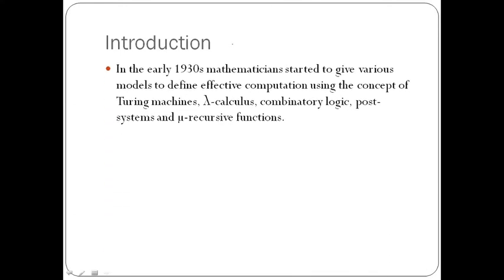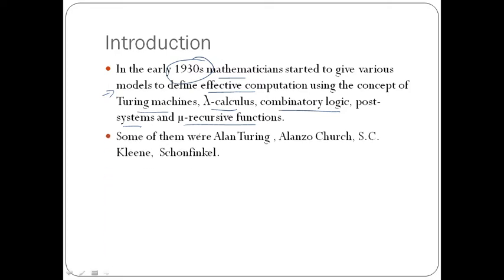To define effective computation using the concept of Turing machines, lambda calculus, combinatory logic, post systems, and mu-recursive functions, mathematicians started to give various models around the 1930s. Some of them were Alan Turing, Church, Kleene, and Schönfinkel.